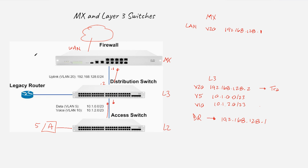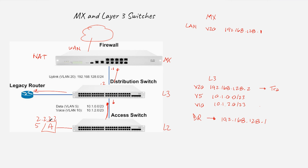The same way a NAT device has a default route saying 'everything else, send it to the internet,' this Layer 3 switch does the same: anything not in its route table — not to a local router or directly connected — send it to the MX, because the MX is the only one that can talk to the internet. So when the Layer 3 switch sees a destination like Google or 8.8.2.2 that it doesn't know, it sends it to the default route.